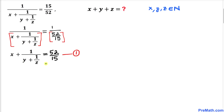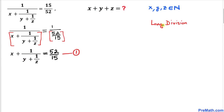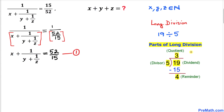Now we are going to manipulate equation one to get the values of x, y, and z. We need to think outside the box. Let's talk about the long division algorithm. For example, 19 divided by 5: here 19 is the dividend, 5 is the divisor, 3 is the quotient, and 4 is the remainder. This is the concept we will be using to solve the problem.